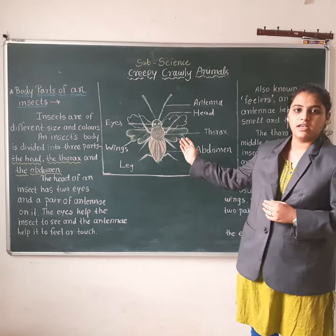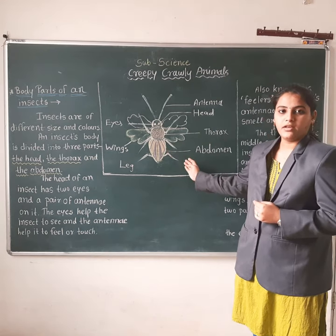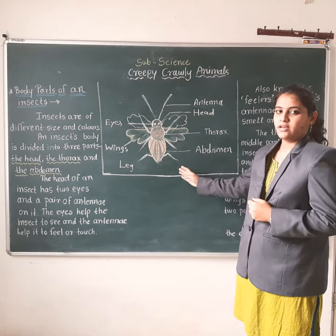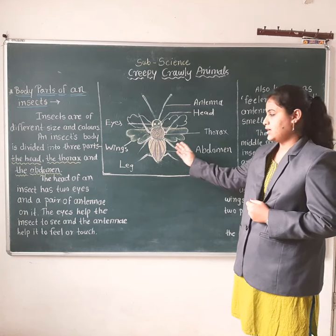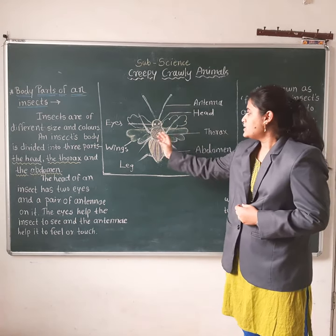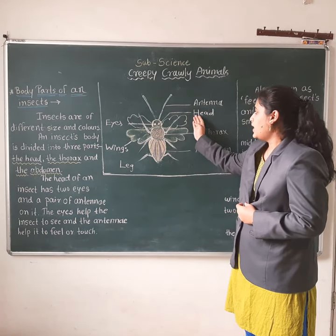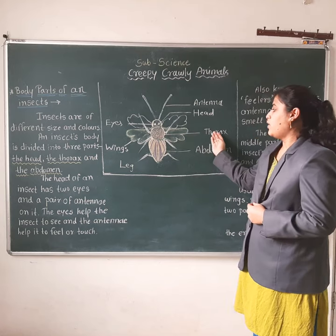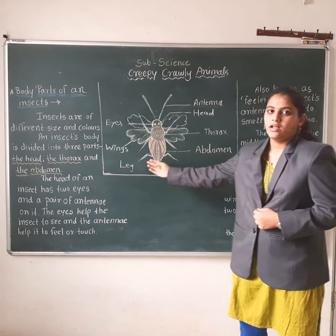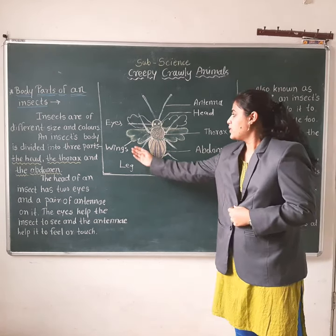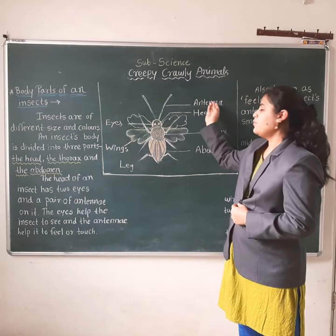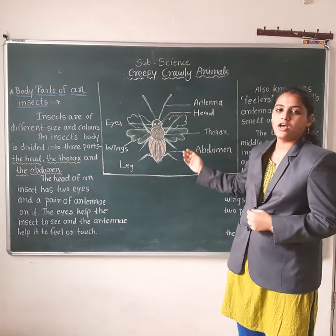Now first, look at the blackboard. I have here a diagram of an insect's body parts. See here — first is the head, second is the thorax, and this is the abdomen, legs, wings, eyes, and a pair of antennae.